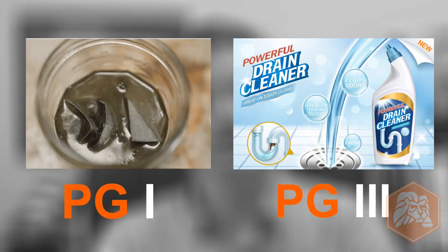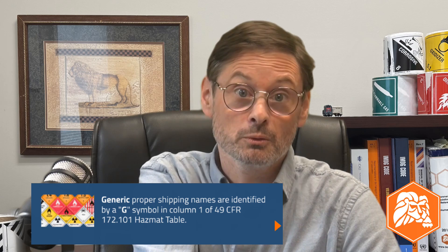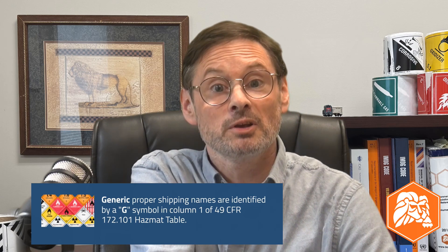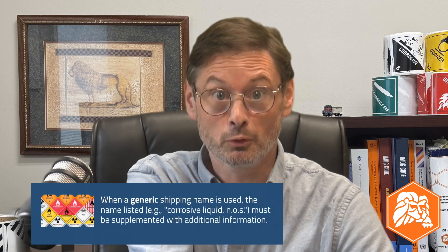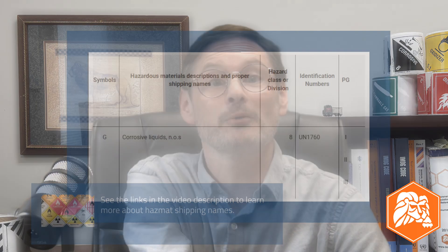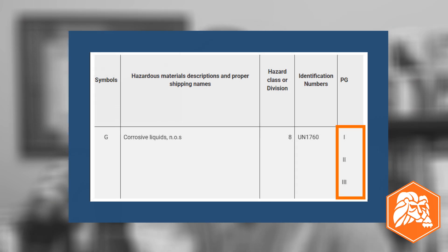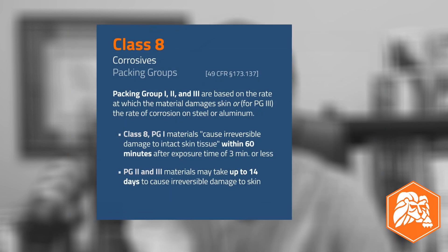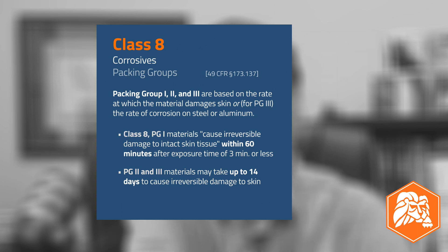It's important to say that a hazardous material and its packing group are not always a one-to-one match. Think back to our corrosive drain cleaner. You won't find drain cleaner listed on the hazmat table; a common generic shipping name used is corrosive liquid, not otherwise specified, or NOS. Here are some details from the DOT hazmat table: drain cleaner can be listed as a class 8 packing group 3 material, but packing group 1 and packing group 2 are also listed with the same shipping name. To know for sure which packing group your generic corrosive liquid belongs to, you need to refer to the criteria in 49 CFR part 173 — for corrosives, that means how fast the material can destroy skin or certain metals.